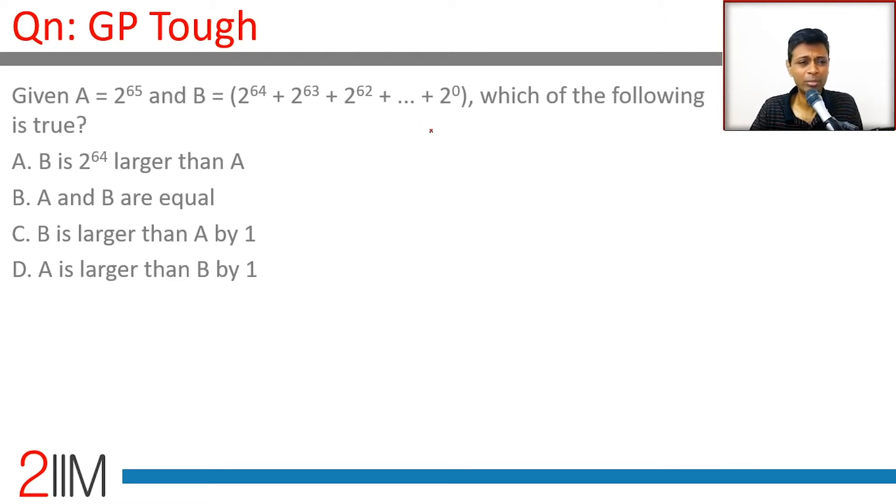Powers of 2 exhibit a brilliant pattern. 1 plus 2 plus 4 is 7, 1 plus 2 plus 4 plus 8 is 15, 1 plus 2 plus 4 plus 8 plus 16 is 31. This is 2 cube minus 1, this is 2 power 4 minus 1, this is 2 power 5 minus 1.